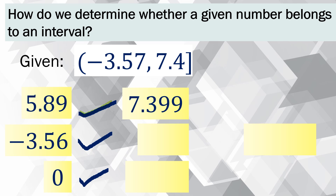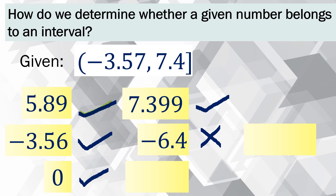Zero is clearly found on the interval. For 7.399 — we do not round off numbers here — 7.399 is less than 7.4, so it is part of the interval. What about negative 6.4? Negative 6.4 is less than negative 3.57, so this number is not part of the interval. And negative 3.62 — since it is not nearer to 0 compared to negative 3.57 — negative 3.62 is less than negative 3.57, so it is also not part of the interval.